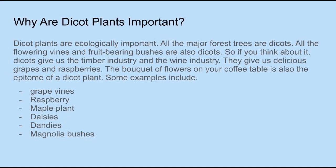Why are dicot plants important? Dicot plants are hydrologically important — all the major forest trees are dicots. All the flowery vines and fruit-bearing bushes are also dicots. Dicots give us the timber industry and the wine industry. They give us delicious grapes and raspberries. The flowers on your coffee table are also an epitome of dicot plants. Some examples include grape vines, raspberries, maple, daisies, dandelions, and magnolia bushes.